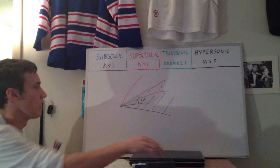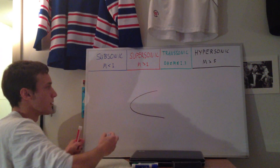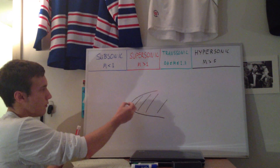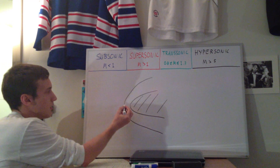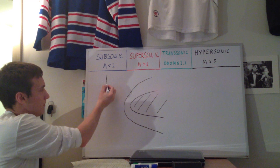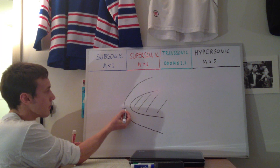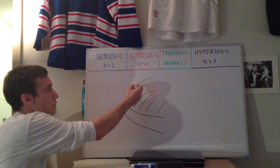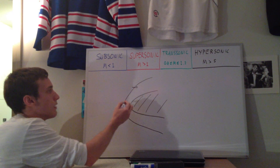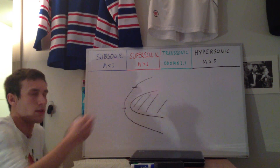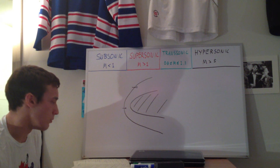Another thing that happens is you get an entropy layer. With a blunt body, you get a detached shockwave. Where the shock resembles a normal shock — perpendicular to the flow — the entropy increases dramatically as you cross it. Farther out where the shock is more oblique to the flow, the entropy increase is less. So all along the body you get large entropy gradients, developing an entropy layer, which also interacts with the boundary layer.